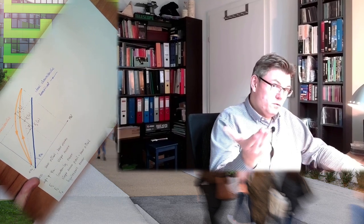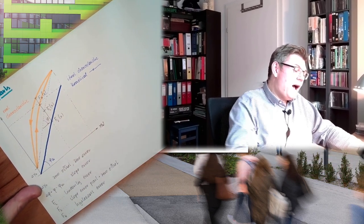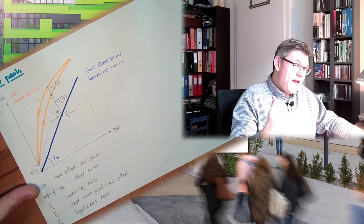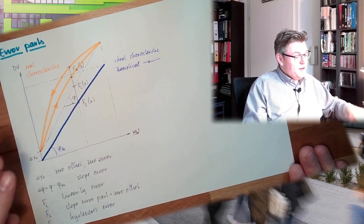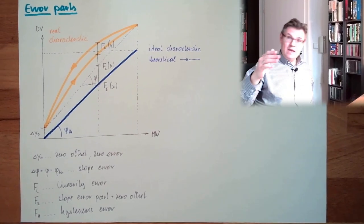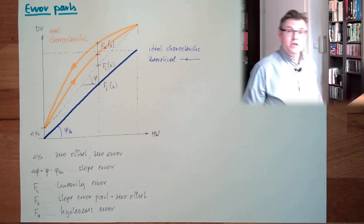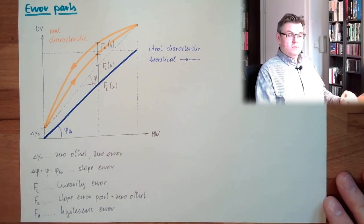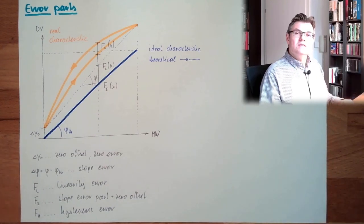We talked about this thing here. We had error parts, we had the theoretical curve. This is what I want. With the theoretical curve I would make no mistake, right? And this is then the curve I really have determined, so the real characteristics. This really determining the characteristic of a measurement system is called calibration.